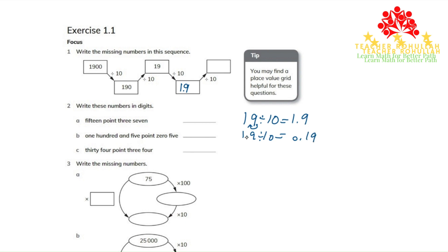This decimal point moves one place to the left, and we give a placeholder zero there. So the answer is 0.19.